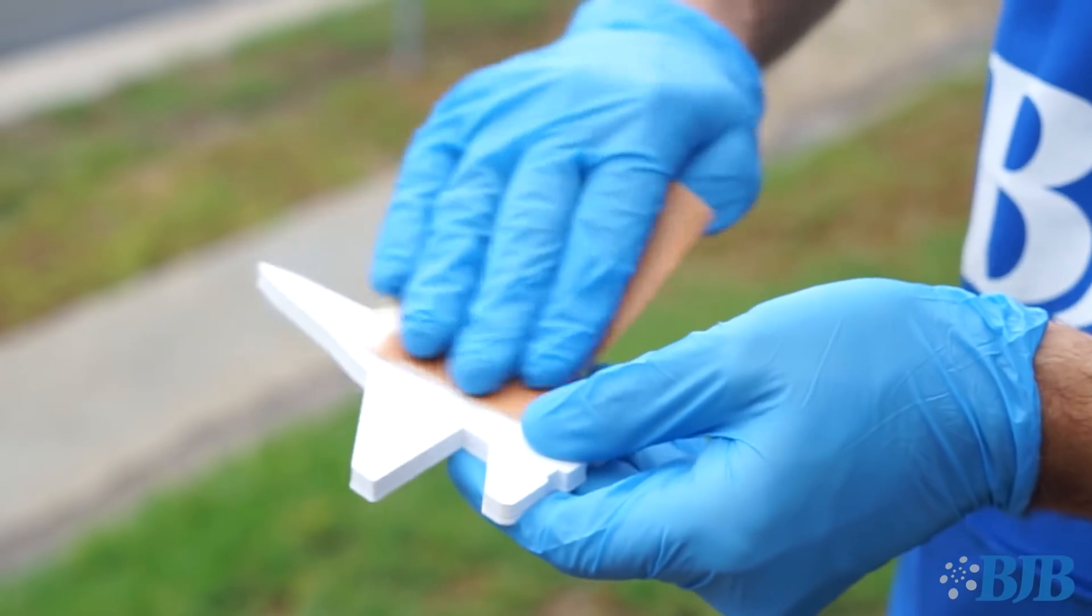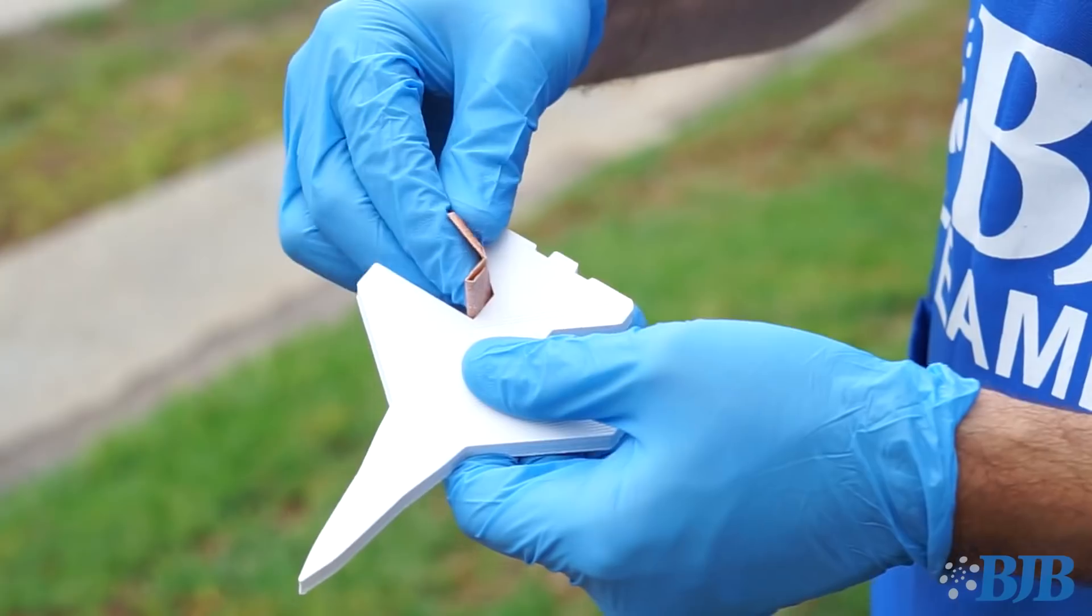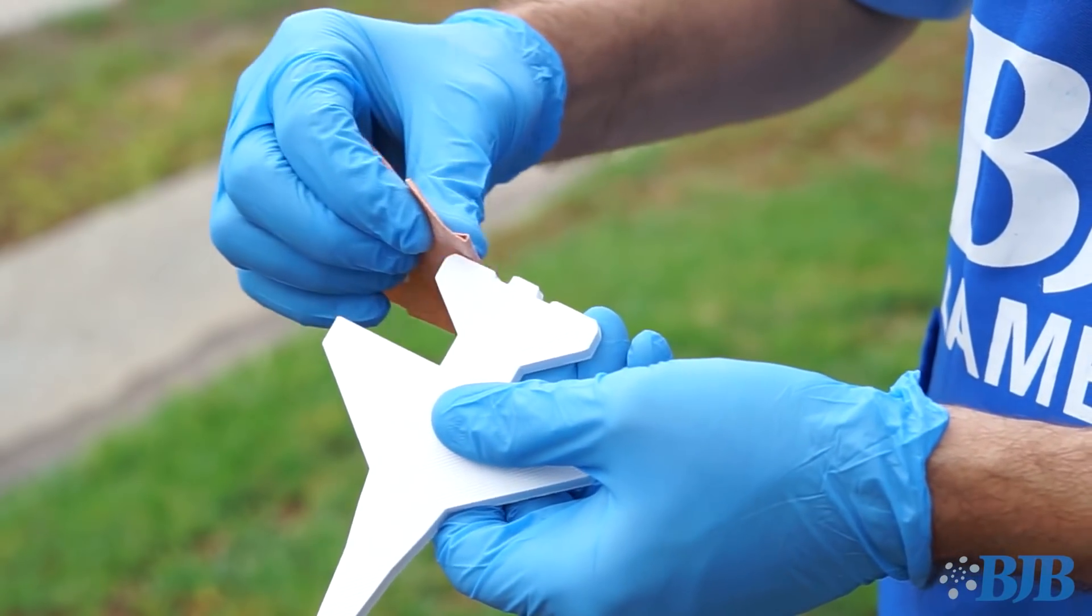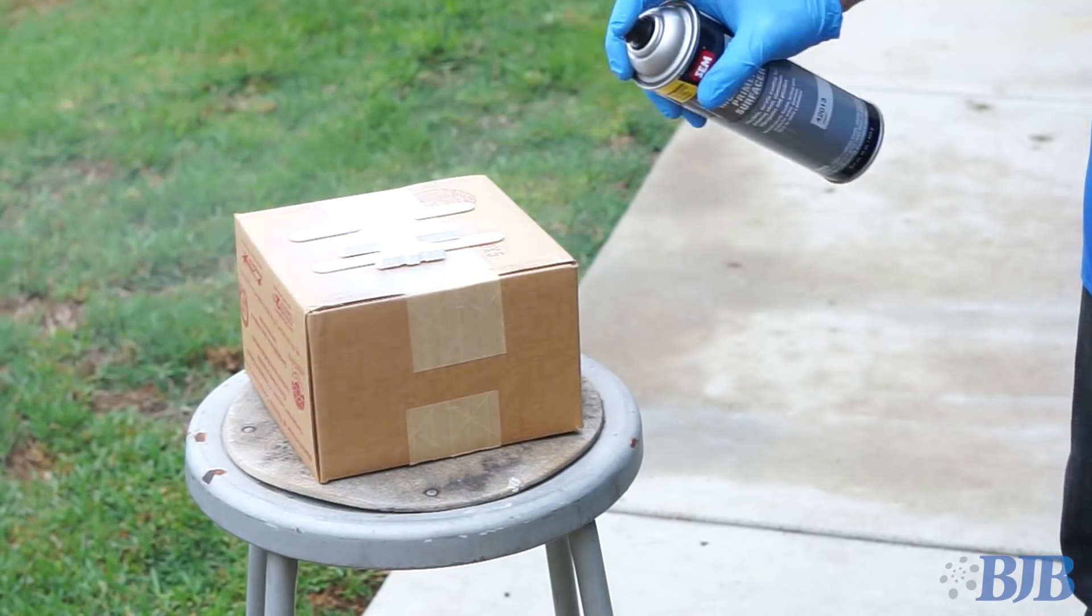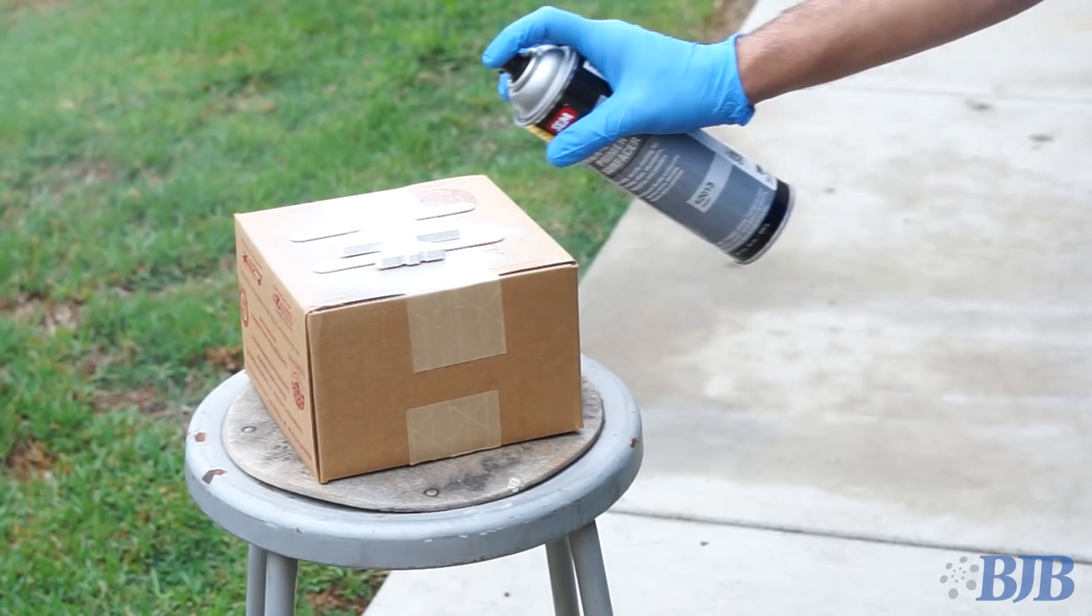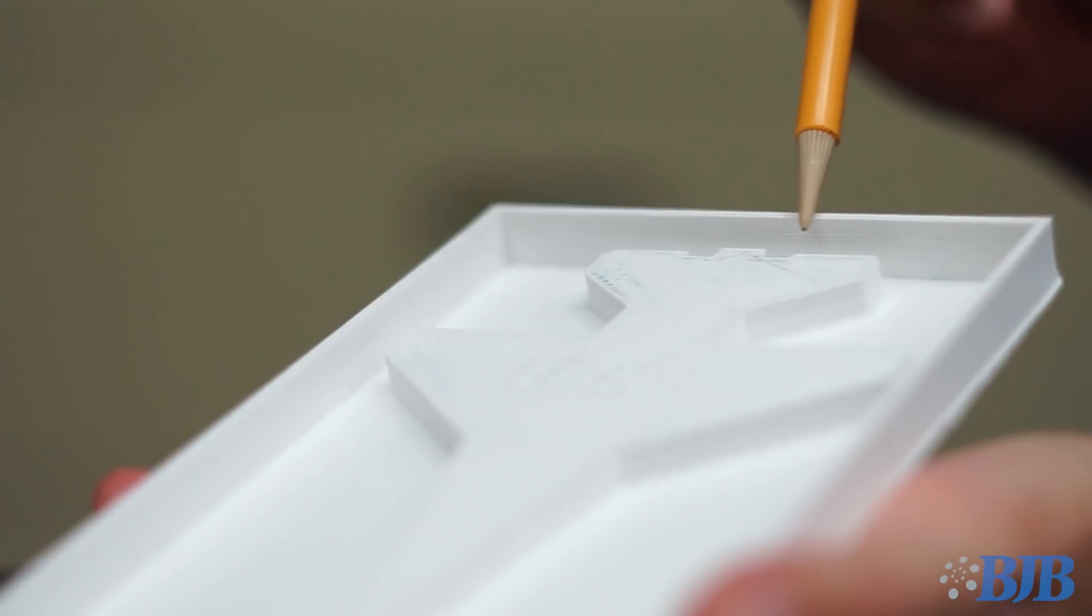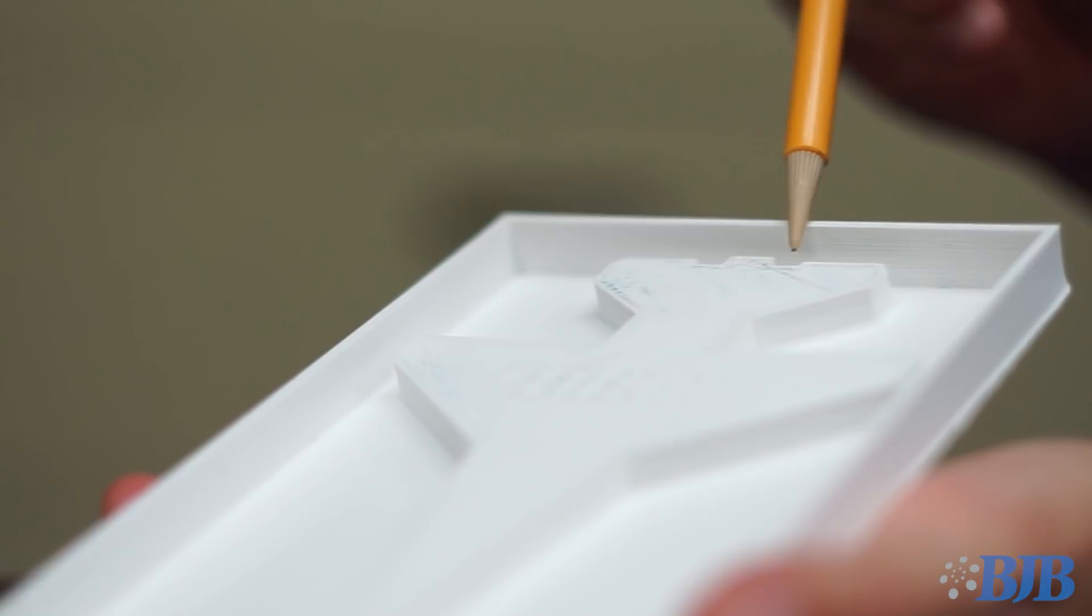3D printing the pattern separately allows you to reach all around the part easily to sand the surfaces smooth, fixing any defects or eliminate build lines using primer and paint. You can choose to add a shiny surface using traditional bodywork techniques, and the silicone mold will replicate those fine details. Printing the pattern in the pre-made box is fast and easy, but you have limited access to address the surface details, should you desire a particular finish beyond what comes out of the printer.